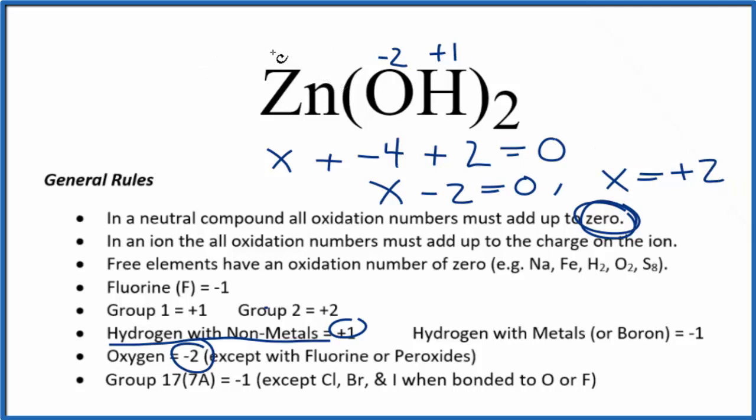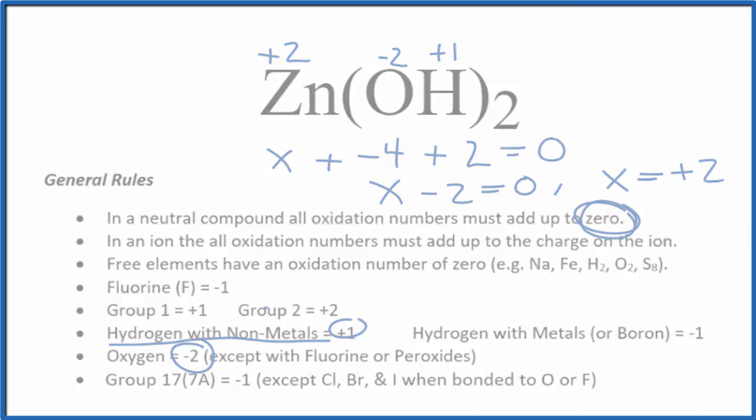So the oxidation number on the zinc is plus two. And most of the time zinc is going to have a plus two oxidation number. This is Dr. B with the oxidation numbers for Zn(OH)₂, zinc hydroxide. Thanks for watching.